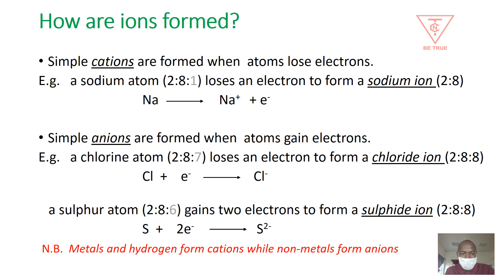To form a simple anion, we need an atom that gains electrons. For example, a chlorine atom whose electron configuration is 2, 8, 7 gains an electron to form a chloride ion whose electron configuration is 2, 8, 8, as shown in that equation. The chlorine atom gains an electron to become a negative ion because the number of negative charges now exceeds the number of positive charges.